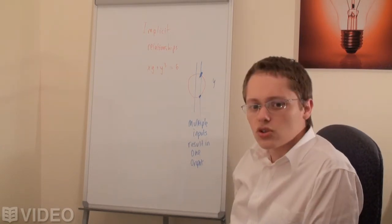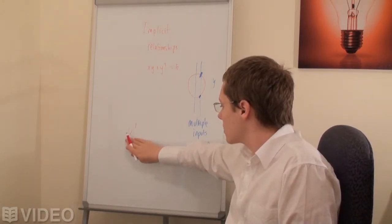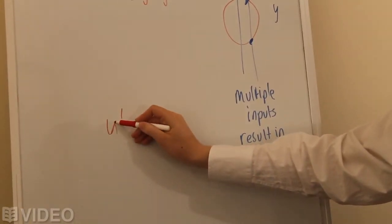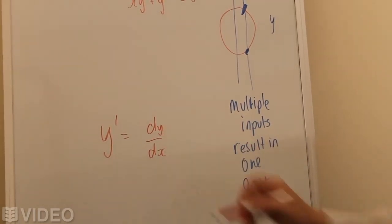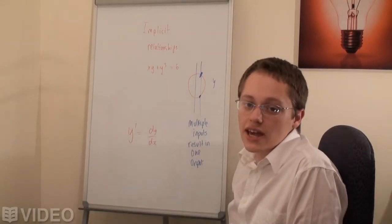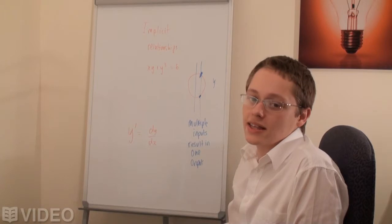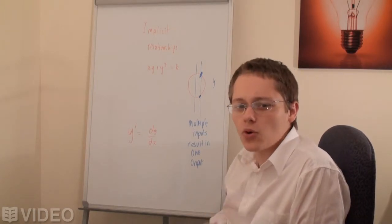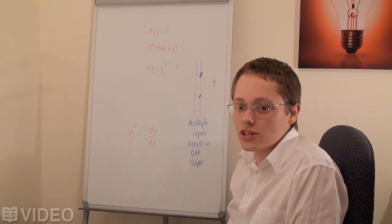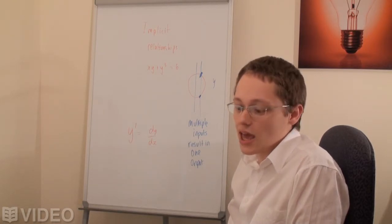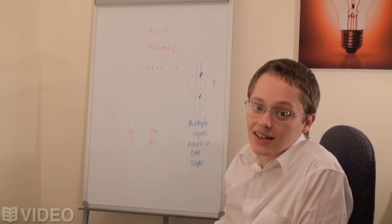Let me introduce you to one little rule before we begin. y prime — the derivative of y — whenever we differentiate a y term, we must give it with respect to x. So we actually include a dy/dx in there; we multiply that term containing y by dy/dx. Implicit differentiation is something that will take a lot of practice, so I really recommend having a go at several examples. We're going to look at two today, just to get our heads around it.